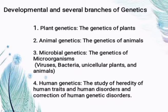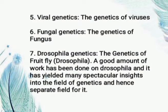Fourth is human genetics — the study of heredity of human traits and human disorders, and the connection of human genetic disorders. Genes are the common factor of the qualities of most human inherited traits. Study of human genetics can answer questions about human nature, help understand diseases and development of effective treatment, and help us understand the genetics of human life. Also, viral genetics covers the genetics of viruses and the study of the mechanisms of heritable information in viruses including genome structure and genetic chains. Next is fungal genetics, the genetics of fungi.